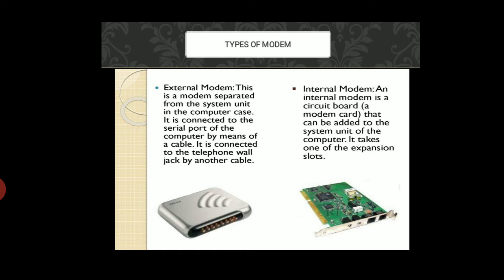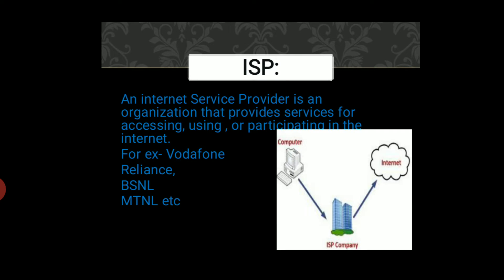The internet is provided to the modem by the Internet Service Provider, which enables the modem to translate analog data into digital data. These providers are telecom companies — ISP companies like Vodafone, Reliance, BSNL, and MTNL. These are the companies which provide internet facility to us.